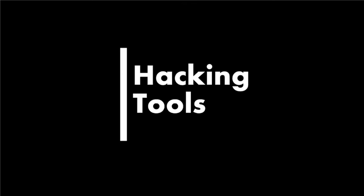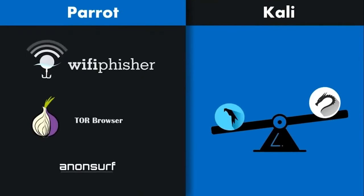The next parameter we're going to compare is hacking tools. Since both these operating systems are tuned for penetration testers and ethical hackers, hacking tools is the most important criteria. When it comes to general tools and functional features, Parrot OS takes the prize. Parrot OS has all the tools available in Kali Linux and also adds its own tools. One such tool is Wi-Fi Fisher — a rogue access point framework for conducting red team engagements or Wi-Fi security testing. Using Wi-Fi Fisher, penetration testers can achieve a man-in-the-middle position against wireless clients by performing targeted Wi-Fi association attacks, and can mount victim-customized web phishing attacks to capture credentials or infect victim stations with malware.